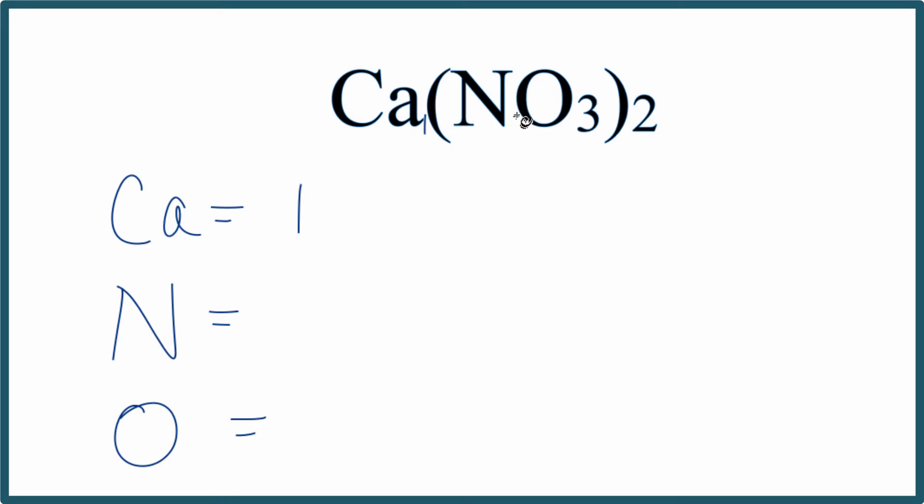Within the parentheses here, we have to be careful because this 2 applies to everything. So we have 1 nitrogen, but that's 1 times 2. So we have a total of 2 nitrogen atoms in this Ca(NO₃)₂ compound.